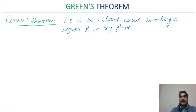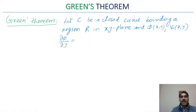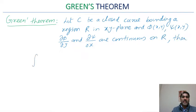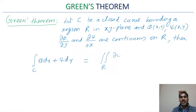Let C be any closed curve bounding region R in the XY plane. Let Φ(x,y) and Ψ(x,y) and their first order partial derivatives ∂Φ/∂y and ∂Ψ/∂x all be continuous on R, where R is the region bounded by the curve. Then the line integral of Φ dx + Ψ dy along curve C can be evaluated as the surface integral over region R of the function (∂Ψ/∂x − ∂Φ/∂y) dx dy.